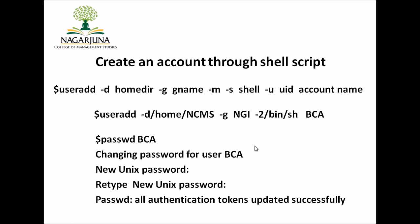Before executing the useradd command, make sure the group NGI already exists; otherwise it will lead to an error. Once the command executes, it creates an account called BCA. To set a password for this account, type the command passwd followed by the login ID. It will prompt you to enter a new password and confirm it. Once set successfully, it gives the message: all authentication tokens updated successfully. This is how you create an account through a shell script.